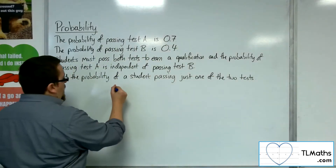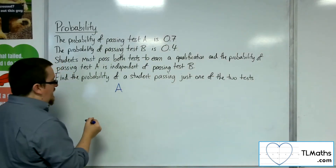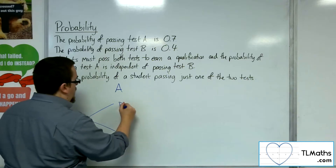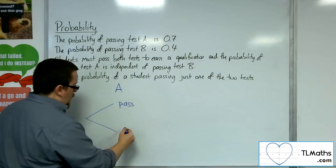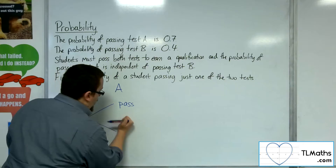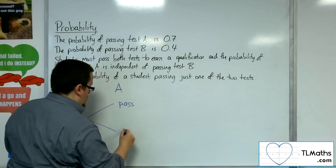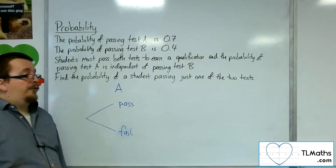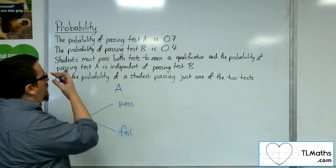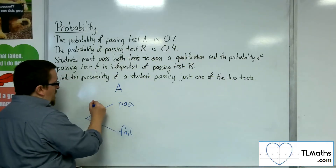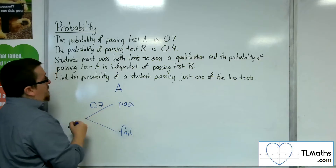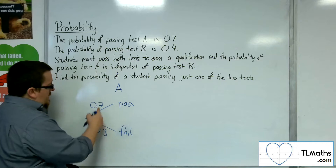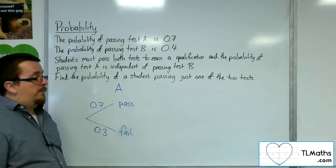So they're first going to sit test A, which they are either going to pass or fail. The probability of passing is 0.7, and the probability of failure is therefore 0.3, because these two have got to add up to one.